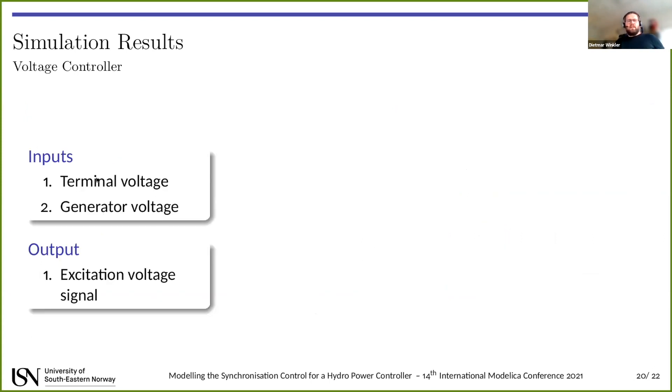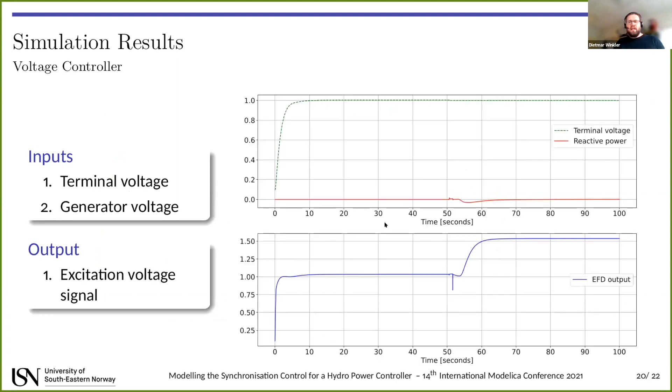Last thing, voltage controller. It has two inputs, the terminal voltage and the generator voltage. Then the output is the excitation voltage. Here you can see during the synchronization, the output is set to slightly above one in order to keep the terminal voltage as it should be. Once we're connected, it's now producing active power, which means the machine internally uses reactive power, which then the voltage controller tries to compensate in order to run power factor one. So you see here the output of the voltage controller is ramping up in order to provide enough reactive power for the active power production.